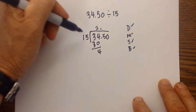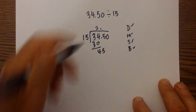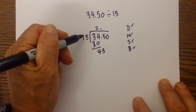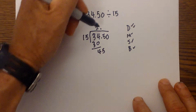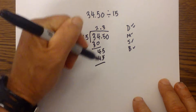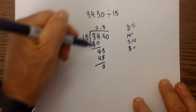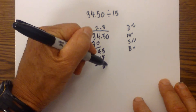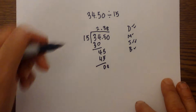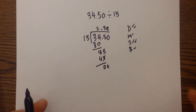And finally we bring down the 5. Make sure the decimal goes there. Next, 45 divided by 15 — we divide, which is 3. 3 times 15 is 45. Subtract: 45 minus 45 is 0. We bring down 0, so I'm just going to place a 0 right there. So the answer is 2.30 — 34.50 divided by 15 is 2.30.